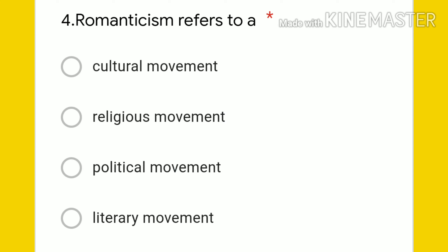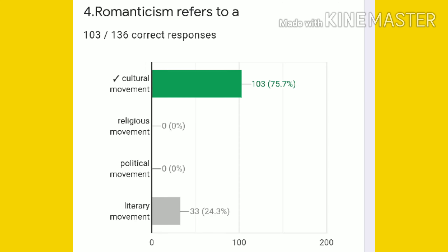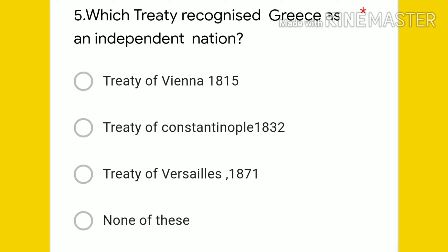Fourth question: Romanticism refers to which movement — cultural, religious, political, or literary? The right answer is cultural movement. 103 students gave the right answer; 33 students chose literary movement. The right answer is cultural movement.